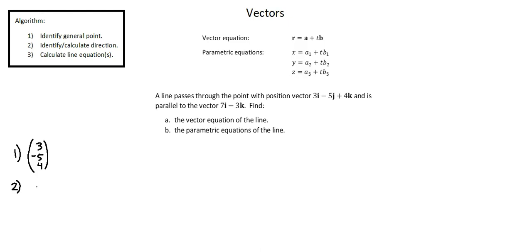In our case we're told that our line is parallel to the vector 7i minus 3k. So our direction, taking the x, y, and z components of the parallel vector, is 7, 0, and negative 3. The zero resulting from no j component of that vector.